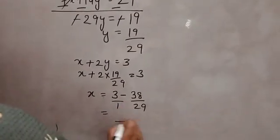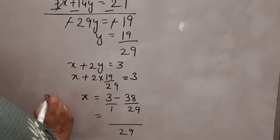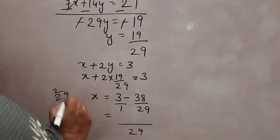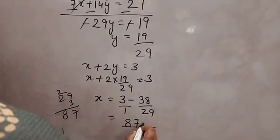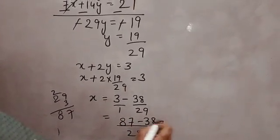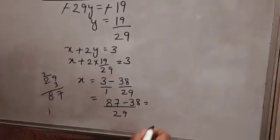Now nothing is there. So 29 into 3. 3 times 9 is 27. 3 times 2 is 6 plus 2 is 8. 87 minus 38. When you will subtract it, you will get 49.